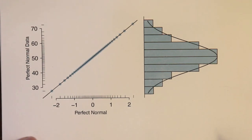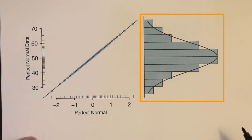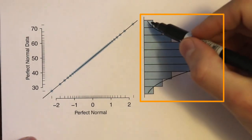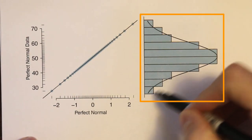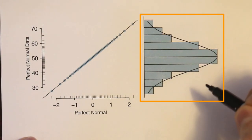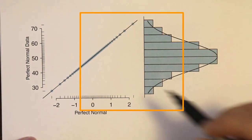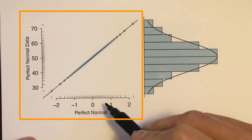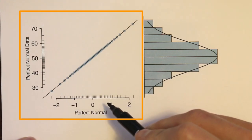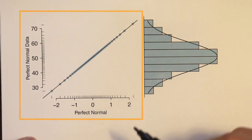In this video we're going to go over two visual ways of checking whether a data set is normally distributed or at least looks closely normally distributed. The first type of plot will look familiar — it's a histogram. The second plot is a new one called a normal probability plot, which is also sometimes called a QQ plot or a normal quantile plot.